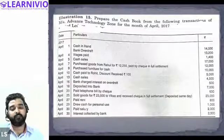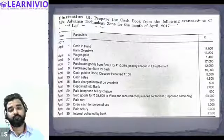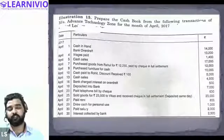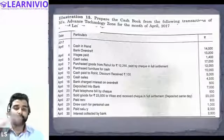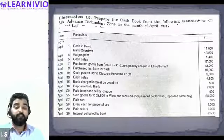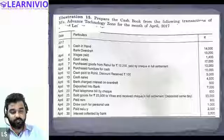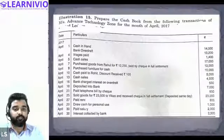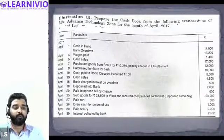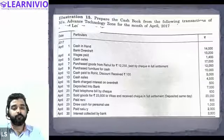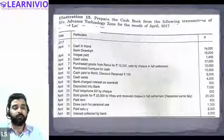On April 4th, paying wages — if nothing is mentioned, presume we are paying by cash. We will credit wages in the cash column on the credit side. Next transaction: cash sales — To Sales Account on the debit side in the cash column. Next: purchase goods from Rahul for 12,250, paid by cheque in full settlement for 12,000 only — this will go in the bank column.